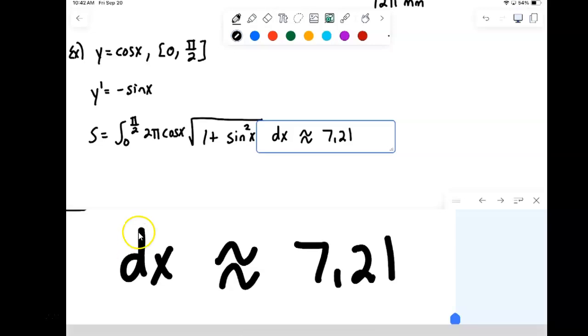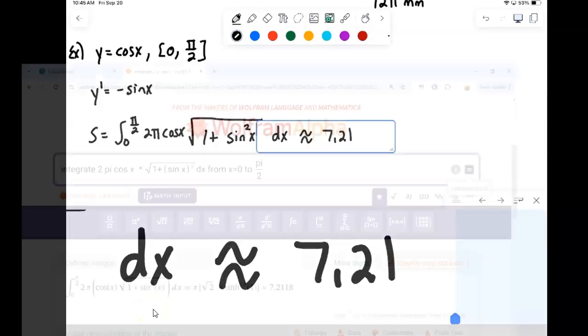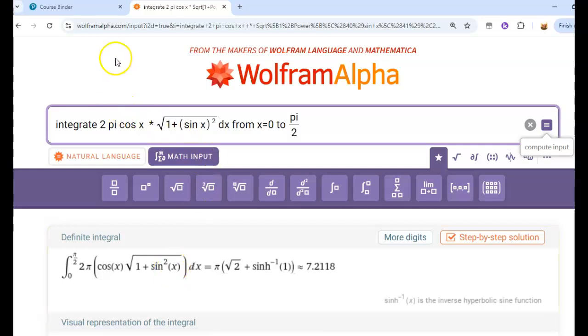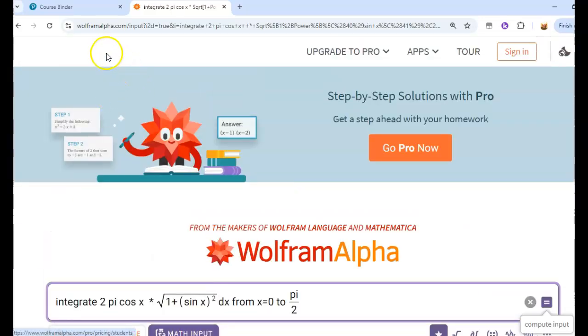Square units again because it is volume. Okay, so again for a lot of these we'll just be going through setting them up and then using your fnInt to approximate. Okay, for the homework if you don't have fnInt, if you don't have a graphic calculator and fnInt, then you can use the Wolfram Alpha.